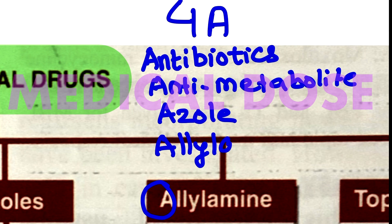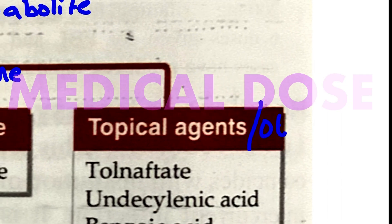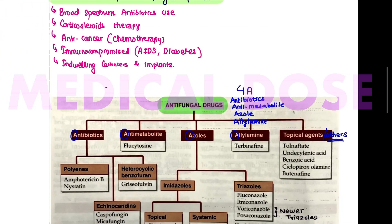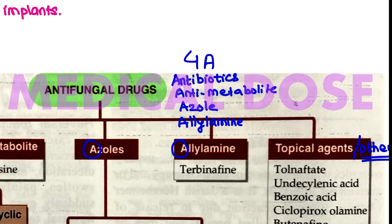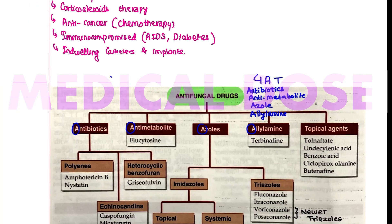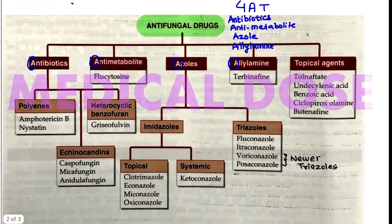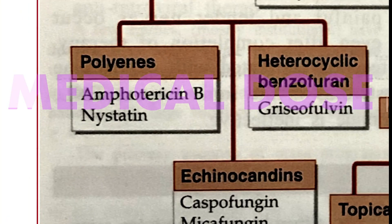The four main categories are antibiotics, anti-metabolites, azoles, and allylamines. The last category is topicals, and others. This is how you need to understand antifungals. You need to understand amphotericin B.